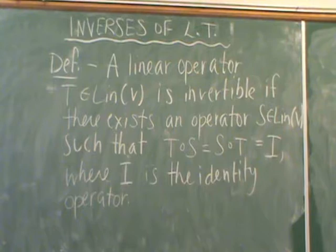is invertible if we can find another transformation or another operator inside of that set of linear transformations from V to V such that the compositions give us the identity operator. So when we compose T and S or S and T, it doesn't matter the order,